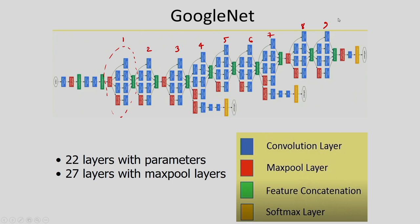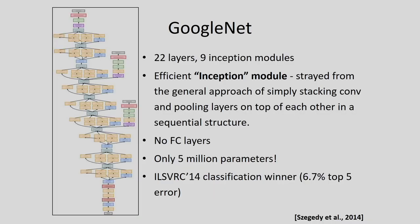The fundamental concept of GoogleNet consists of 22 layers and nine inception modules. Unlike AlexNet or VGGNet, where we consider repeated convolution and max pooling, GoogleNet uses efficient inception modules. One important point is there are no fully connected layers and only 5 million parameters. GoogleNet was the winner of the ILSVRC 2014 classification problem with a 6.7% error rate.